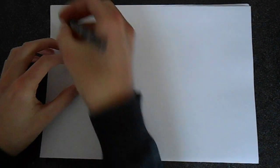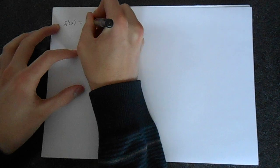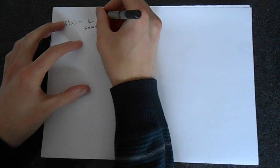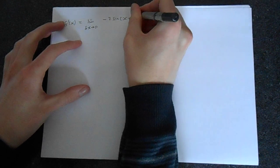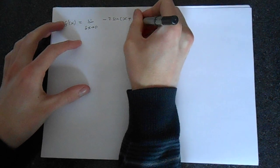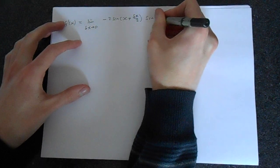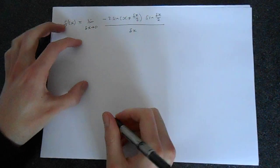OK, so let's do the substitution, very simple. So we say that f dash x, our derivative, is the limit delta x goes to 0 of minus 2 sine x plus delta x over 2, sine delta x over 2, over delta x.